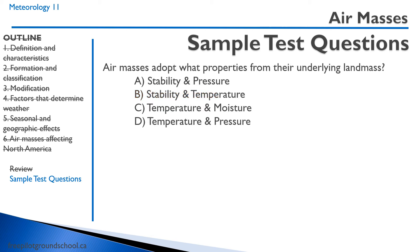Question: Air masses adopt what properties from their underlying land mass? A, stability and pressure; B, stability and temperature; C, temperature and moisture; D, temperature and pressure. Recalling our definition of an air mass, they adopt the temperature and moisture from the land mass underneath. So if it's over maritime regions, you'll get cool moist air, and down in the Caribbean, it's going to be warm or hot and moist air. The correct answer is C, temperature and moisture.